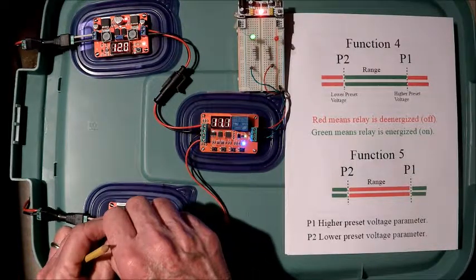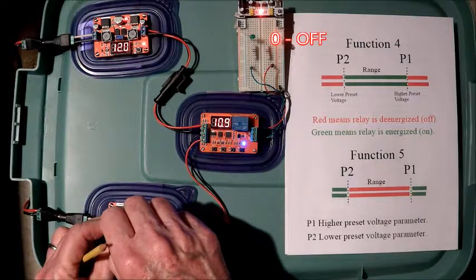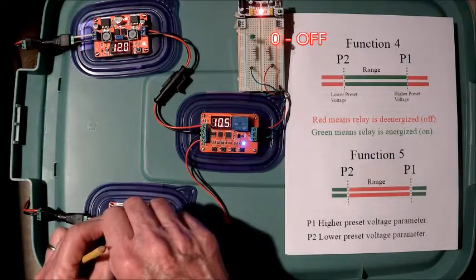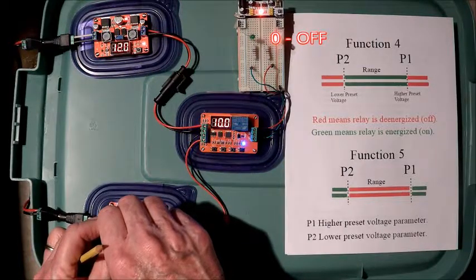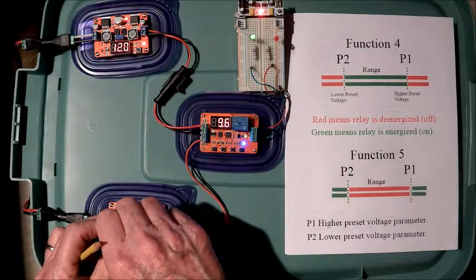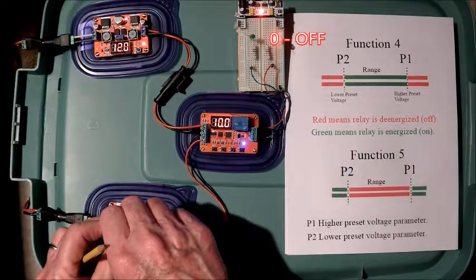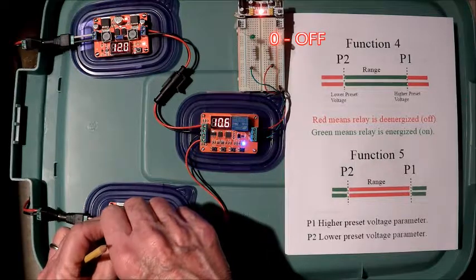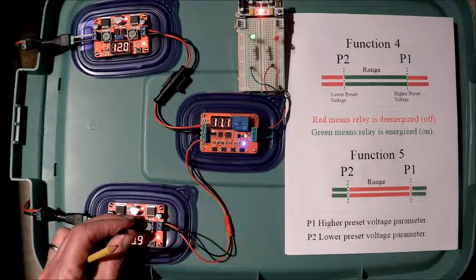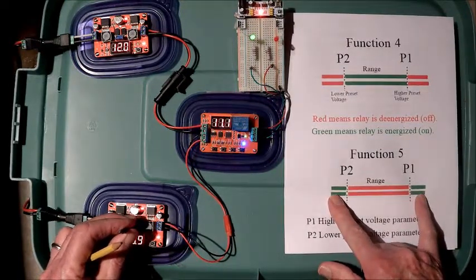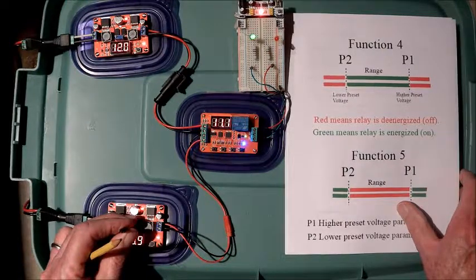Coming down below the high preset voltage, the relay should de-energize. It will stay de-energized until it goes beyond the lower preset voltage. When it comes back up above 10 volts, it will de-energize. It will stay de-energized until it passes 11 volts. Outside the range, the relay is on. Inside the range, the relay is off. Just the opposite of what you have with Function 4.